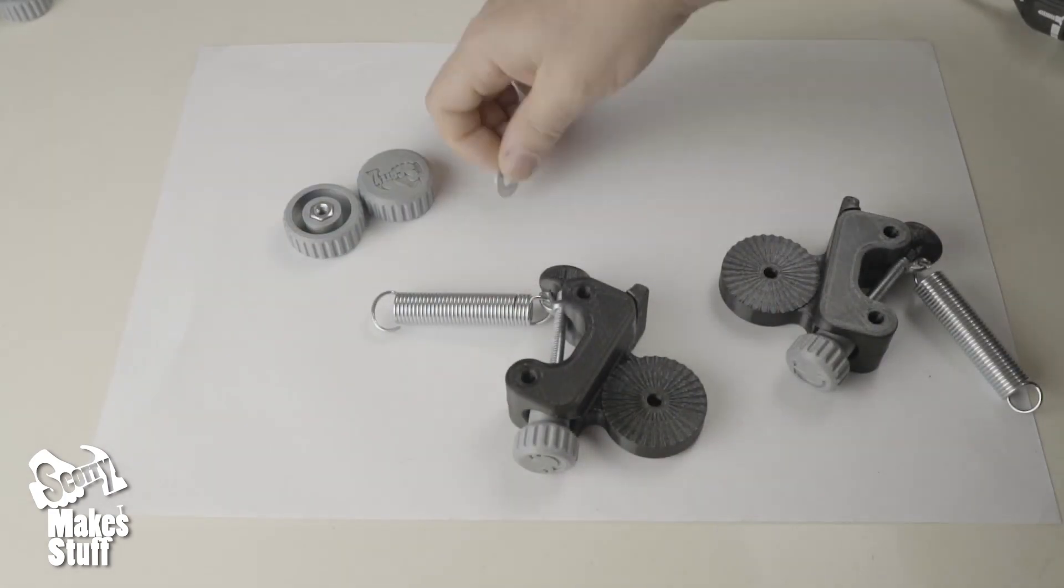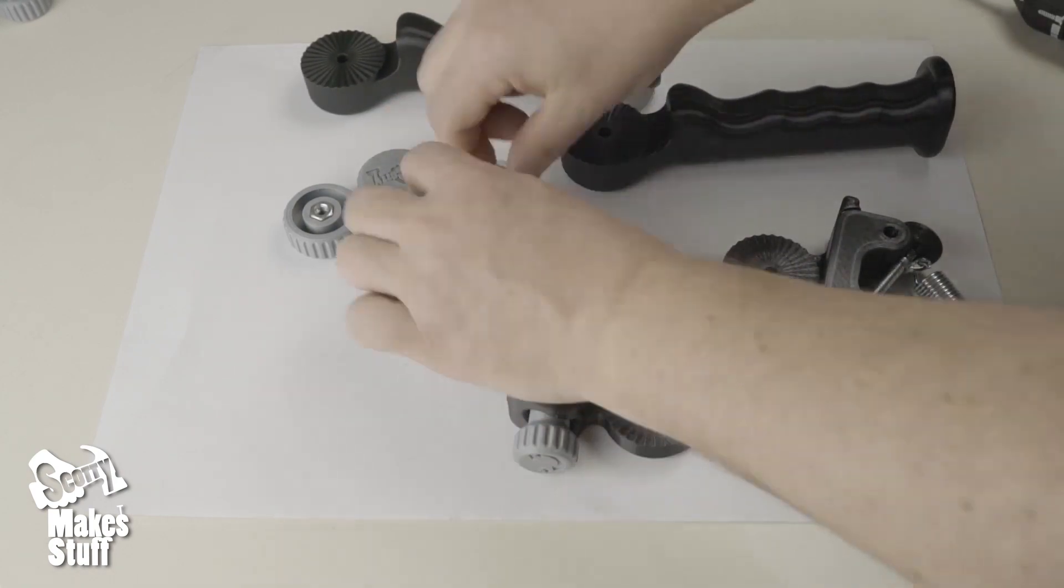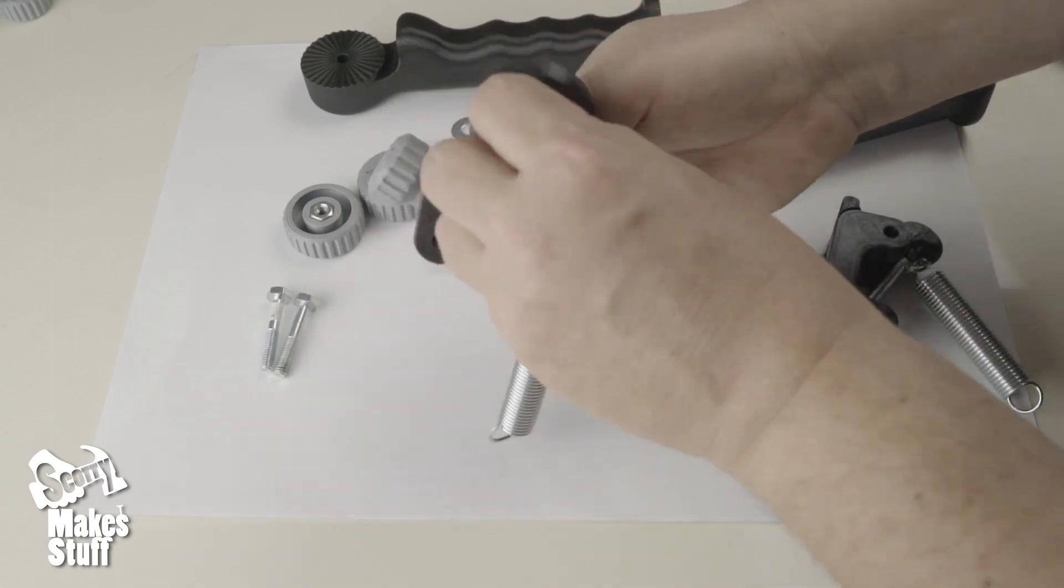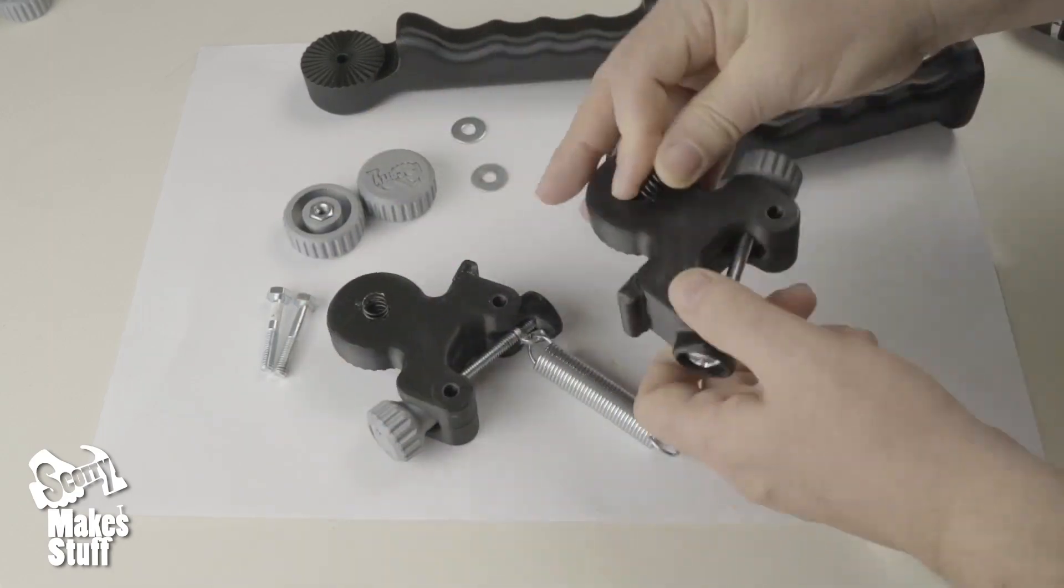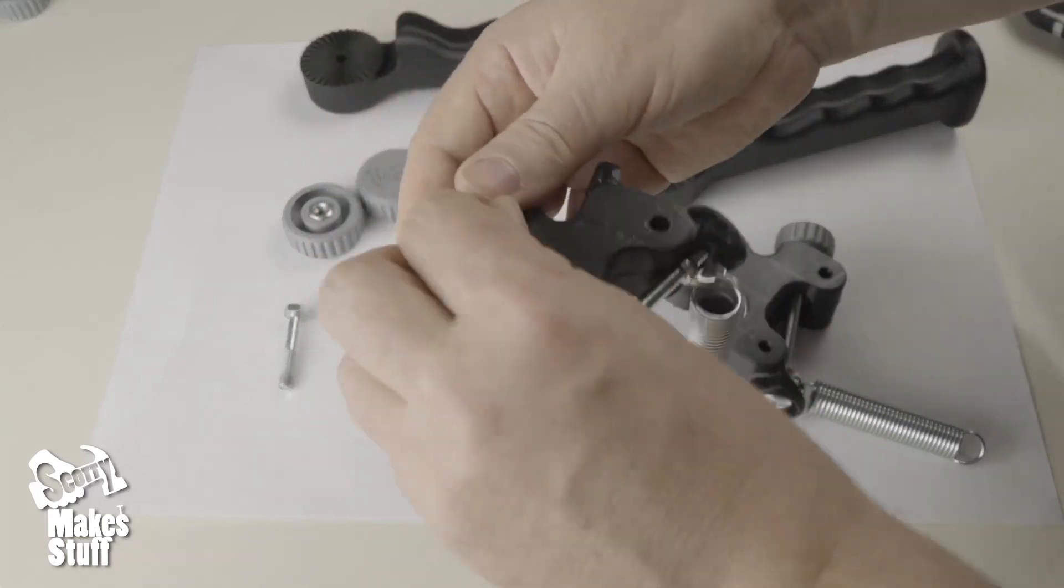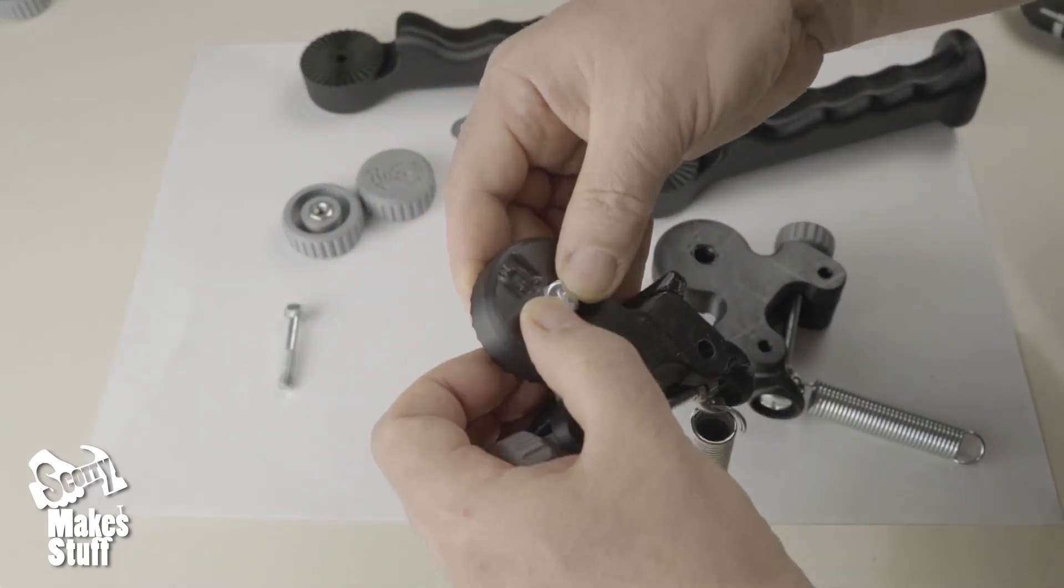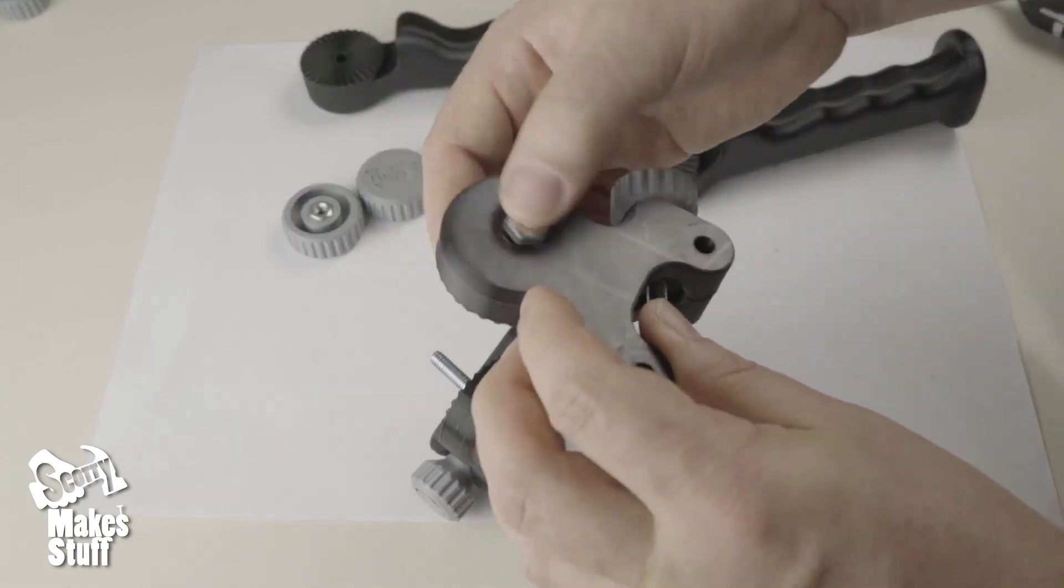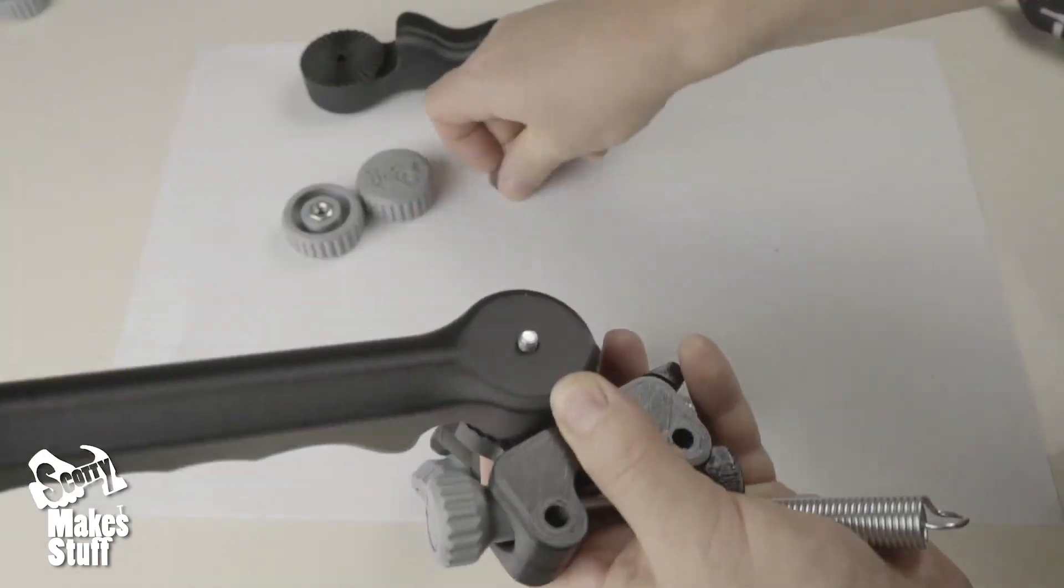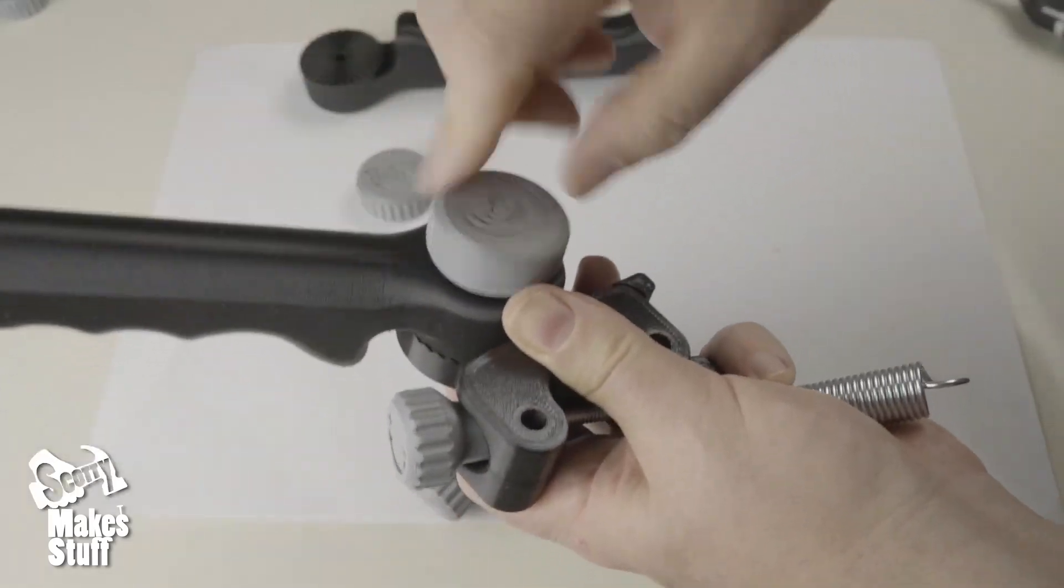Now we'll attach the rosette handles. First, the optional spring. Then we hold the bolt head at the back of the handle. A steel washer, and finally the handle knobs.